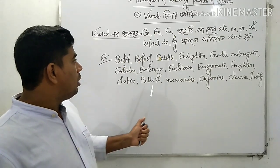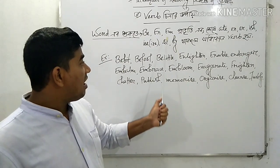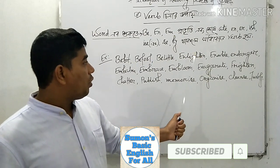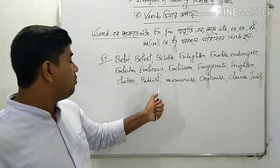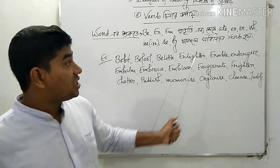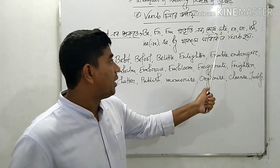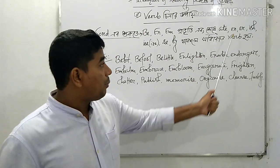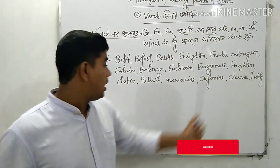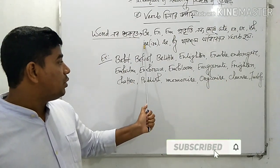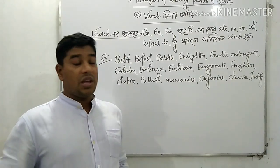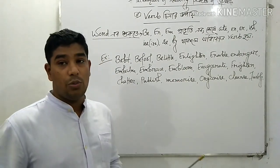For verbs, we use prefixes like: Be-full, Be-little, En-able, En-danger, Em-brace, and suffixes like: -ize (as in Exaggerate, Chatter, Publish, Memorize, Organize), -en (Enable), and -ise.